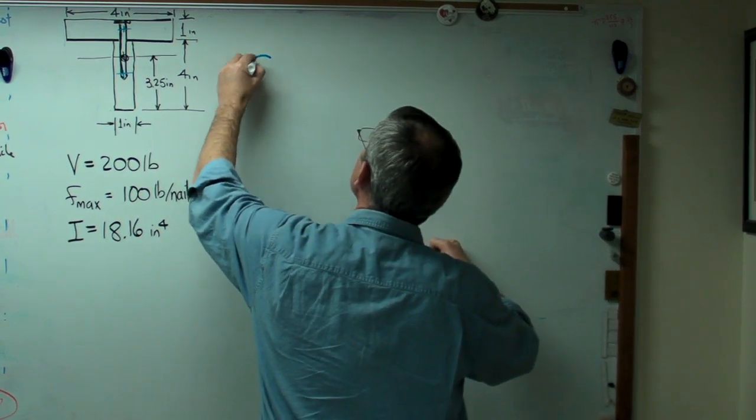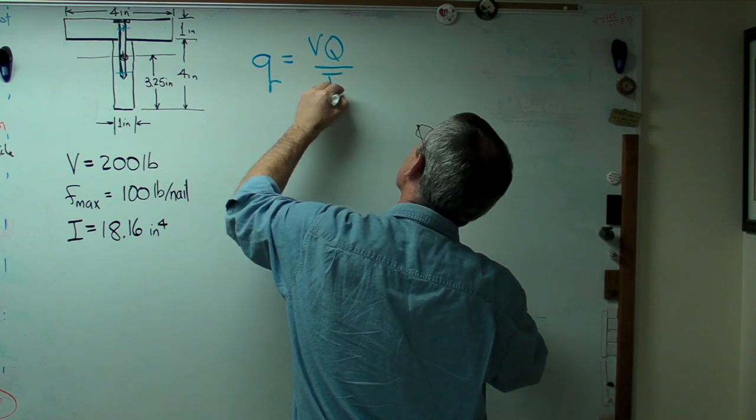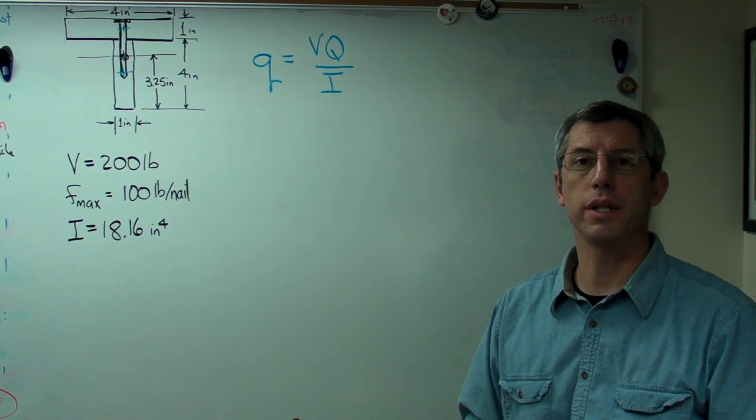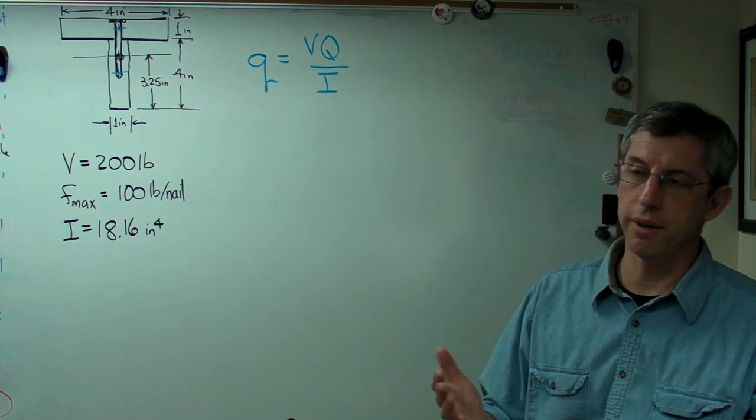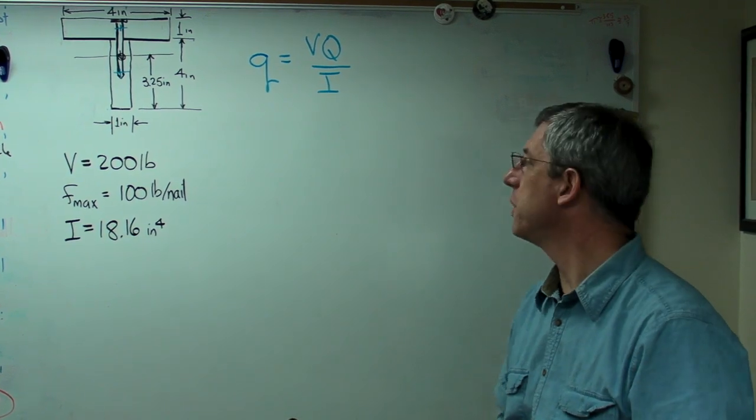The governing equation for shear flow is VQ over I. We use the letter little q to designate shear flow. Now why little q? I don't know. There's 26 letters in the alphabet. You eventually have to start reusing some.